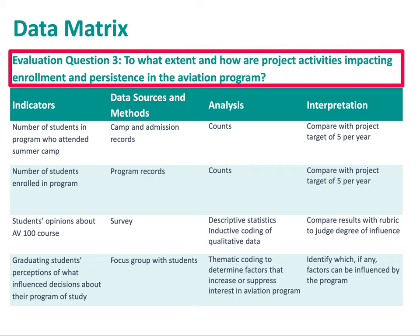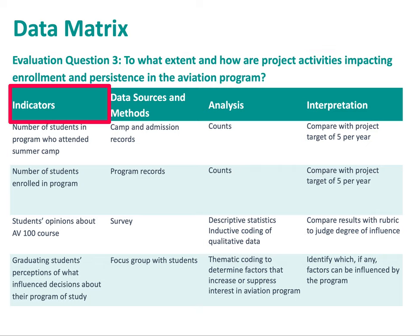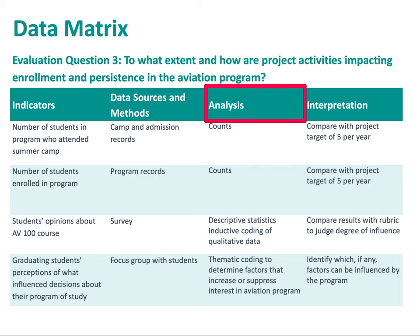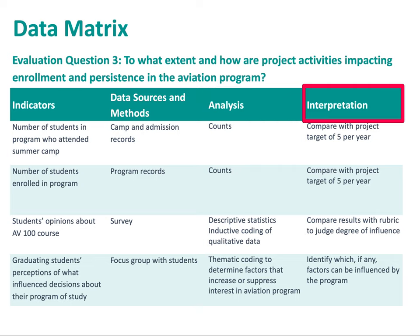Here we have the overall evaluation question, and then we have the indicators to answer that evaluation question, the data sources and methods for each indicator, and the analysis and interpretation for each indicator. Using this format really forces you to think carefully about the data that you'll collect, how you'll get it, and how you'll use that data. Using a matrix format like this can really help to strengthen your evaluation plan and show the logical connections between your indicators, data sources, analysis, and interpretation.